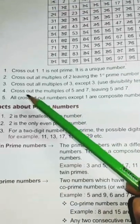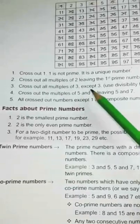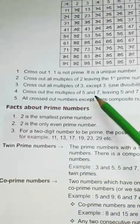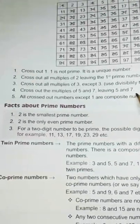Three point is, cross out all multiples of 3, except 3. Then, cross out the multiples of 5 and 7, leaving 5 and 7.